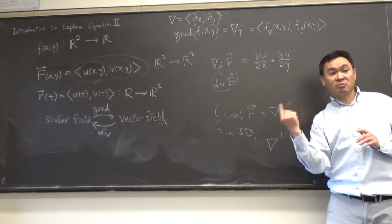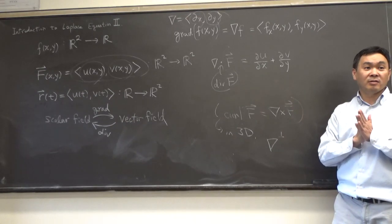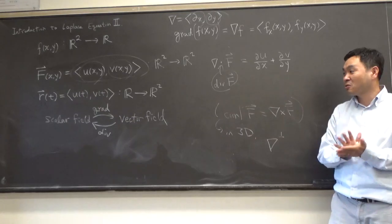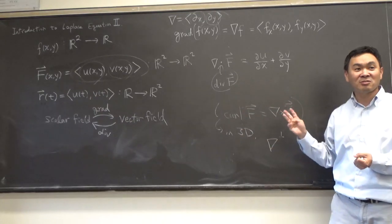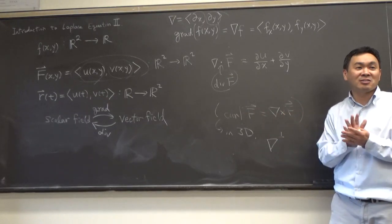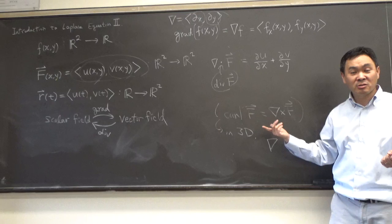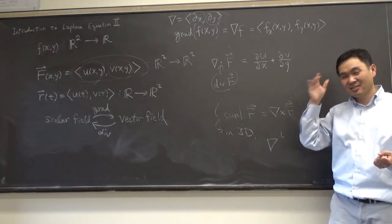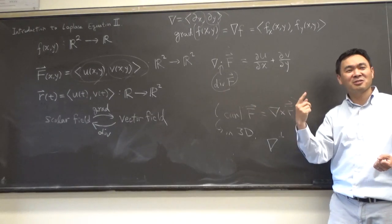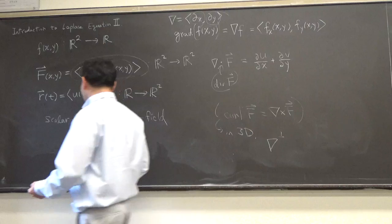Nabla-perp tells you how much the vector field is rotating — it's related to electricity and magnetism. The reason we review all of this is because gradient, divergence, and curl are basically the backbones of all calculations for electromagnetics — Gauss's law and other fundamental laws all relate to these operators.